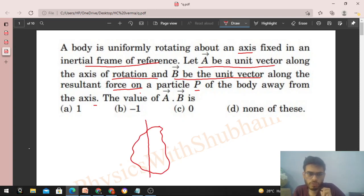Now uniform rotation means that if I take any particle on this body, it's about uniform circular motion. So let me draw the figure. Let's say this is particle P. This is uniform circular motion about this axis, right?